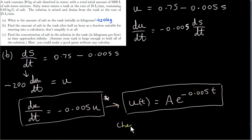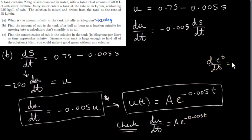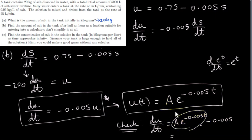It's very easy to check this. All we do is work out du/dt for this solution. du/dt is a·e^(minus 0.005t). When you differentiate e to the t with respect to t you just get e to the t, but we have to use the chain rule and multiply by the derivative of the power, which is minus 0.005. So this is just u, and we get minus 0.005 times u, which is what we want. We want du/dt to equal minus 0.005 times u — so it does check out.